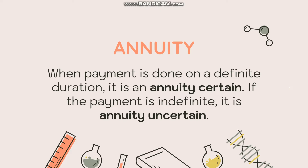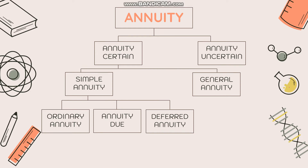Annuity uncertain means the payment is indefinite — we don't know the exact date when it will end. For example, when you are renting a house, as long as you live there you have to pay. Insurance is another example, because there is no definite end to paying. So again, the two kinds of annuity are annuity certain and annuity uncertain.